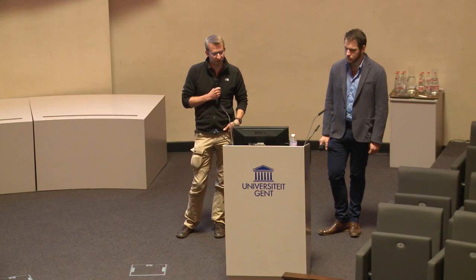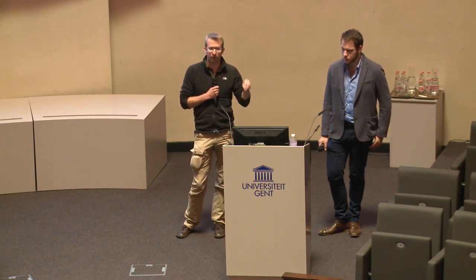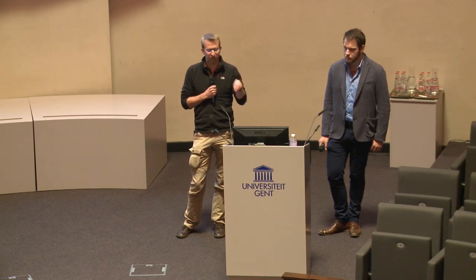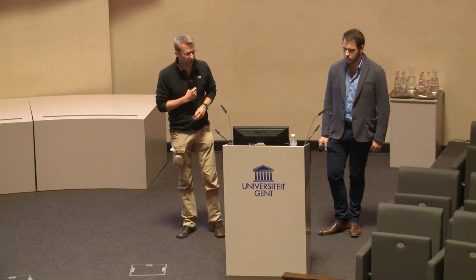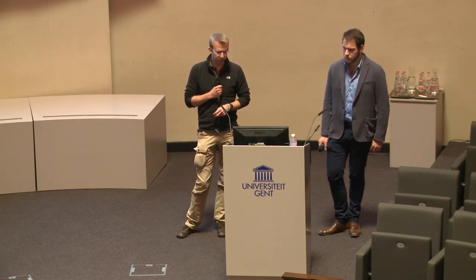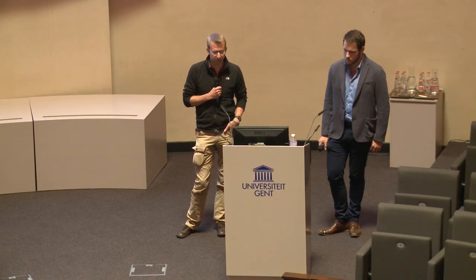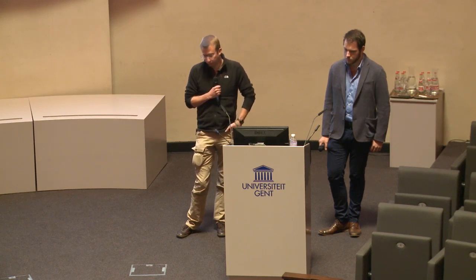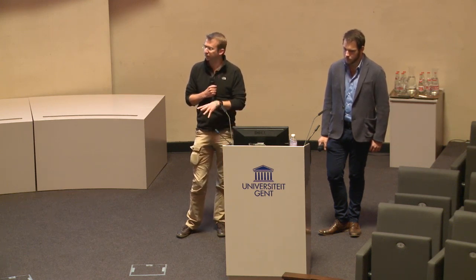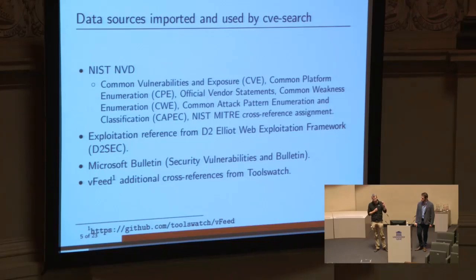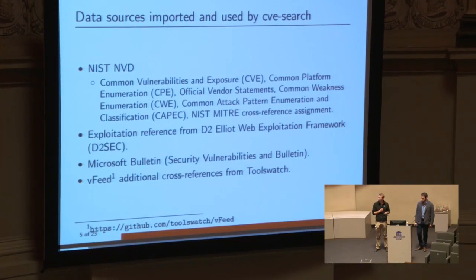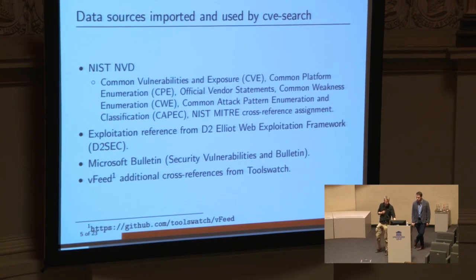There are also cross-reference assignments, such as MS advisory values linking back to CVE values — there are a lot of IDs in use and it can be difficult to find information. We have two additional sources from external contributions: Microsoft's built-in data and the exploitation reference from D2 Security, a vulnerability framework. We also import a data feed called vFeed, which does great cross-referencing work. If you know of other public data sources we can incorporate, let us know — we are very interested.